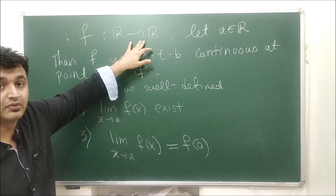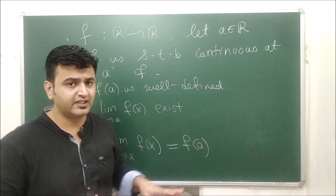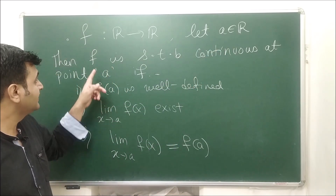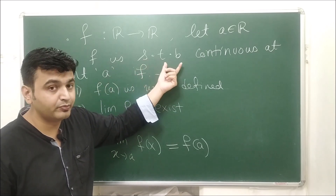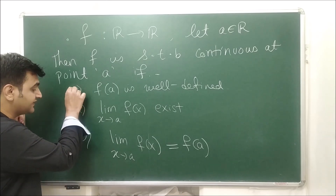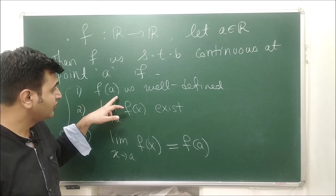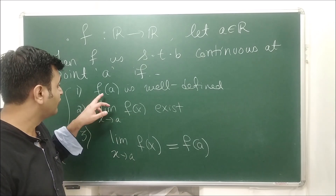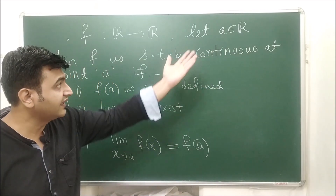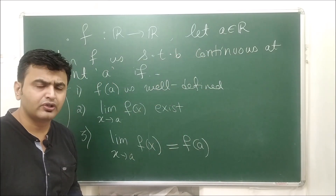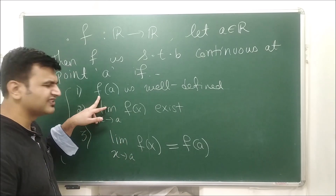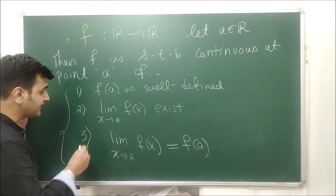What do we mean by a continuous function? If you have a function from the real numbers to the real numbers and you take a fixed real number 'a', when will we say a function is continuous at point 'a'? It satisfies three conditions. The first condition is that f(a) is well-defined — your function should have some value at that point. If the function is not defined at 'a', there is no point talking about continuity. So f(a) must exist.